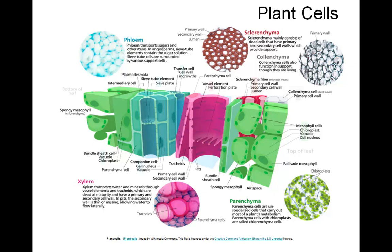Xylem and phloem are types of vascular plant tissue. Phloem is made up of sieve tubes which conduct sugars produced by photosynthesis. Cells that function to pump the sugars into the sieve tubes are companion cells.